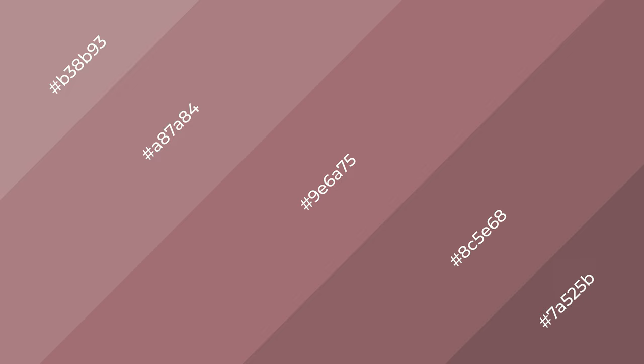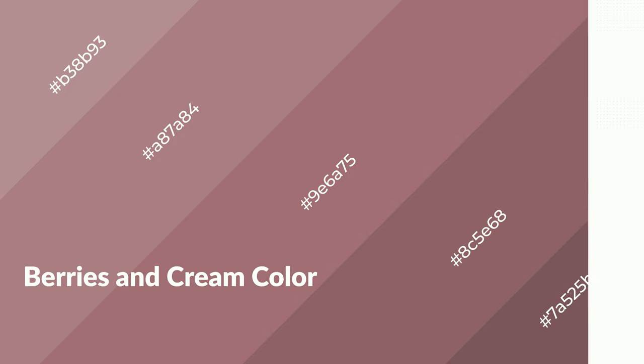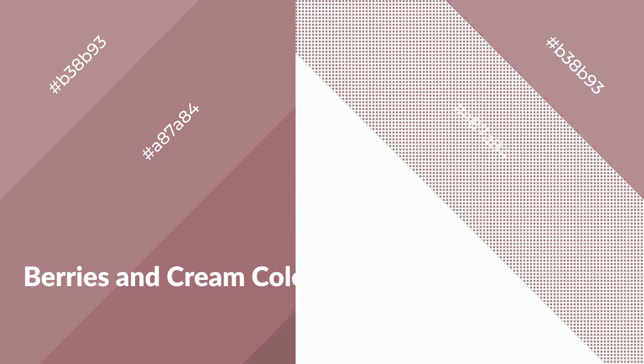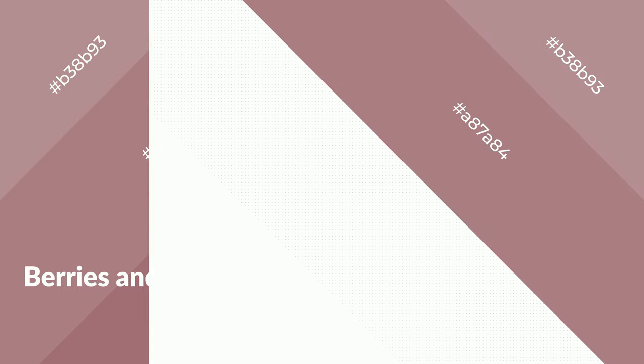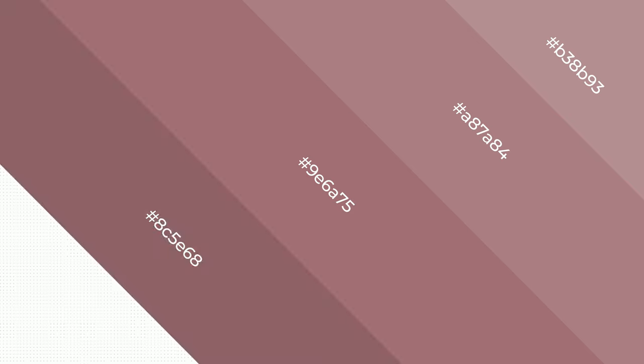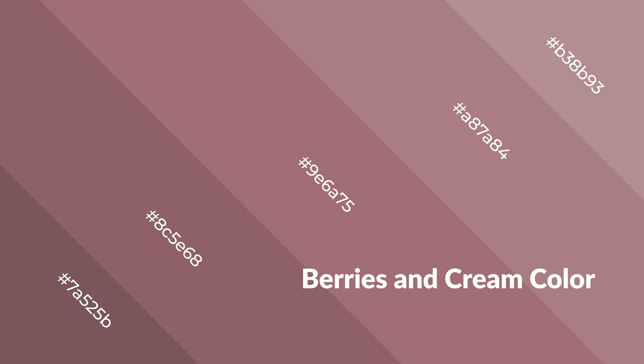Berries and cream is a warm color and it emits cozier and active emotions. Warm colors are symbols of warmth, fire, heat, and sunshine. It also evokes joy, passion, love, and even anger emotions. You can see them used in restaurants and gyms.